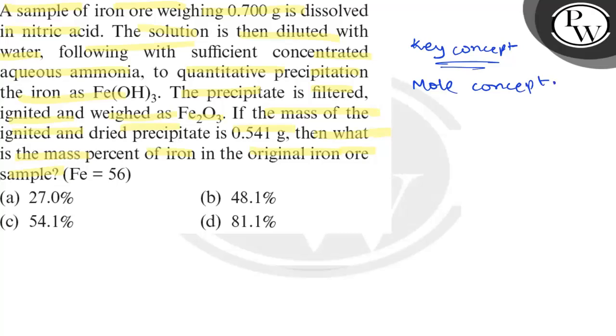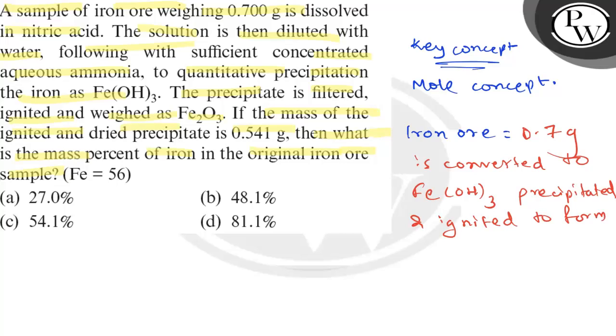We have 0.700 gram sample of iron ore. This is converted to Fe(OH)₃, precipitated and ignited to form Fe₂O₃.